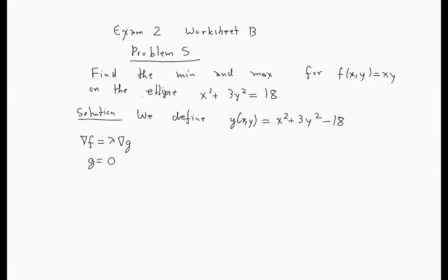It translates to (y, x), that's the gradient of F, because y is the partial derivative of xy with respect to x, and x is that partial derivative with respect to y. And that should be lambda times the gradient of G, which is (2x, 6y).